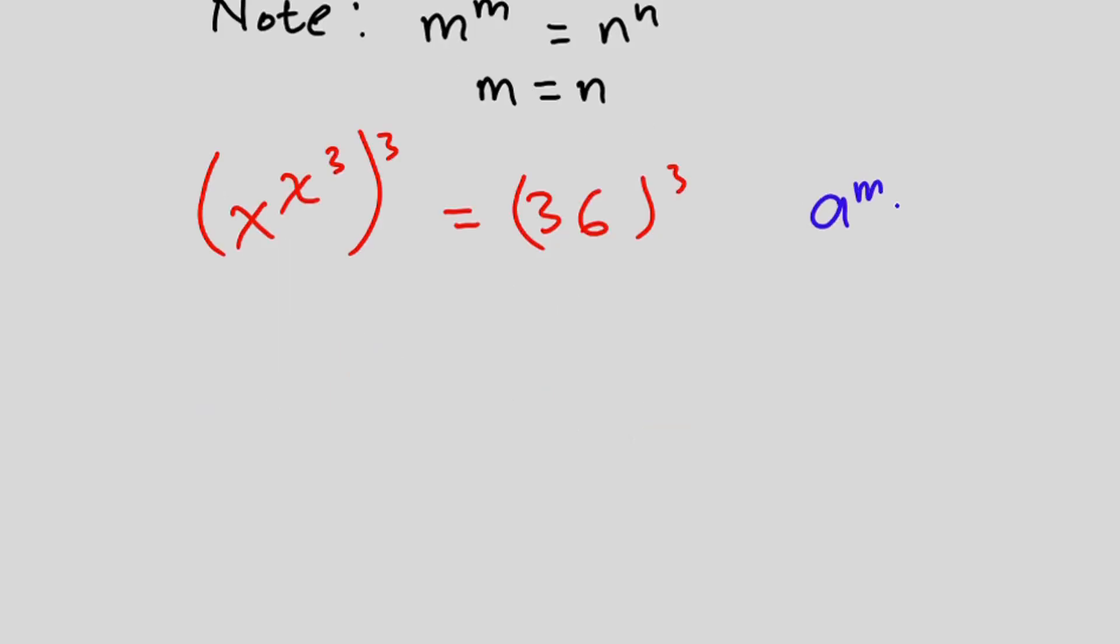That a to the power m, to the power n, is the same as a to the power m times n. Now note that you don't have to multiply this 3 by this one. If we do that, we're going to get it wrong.